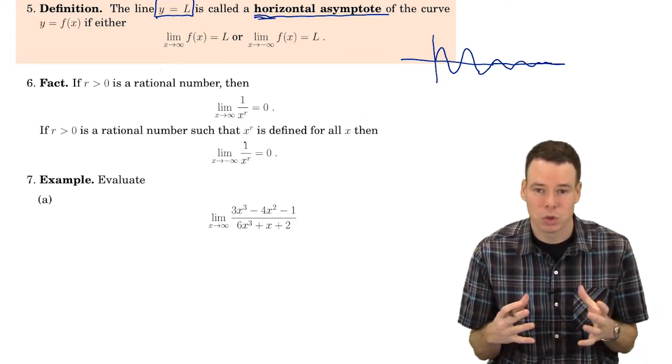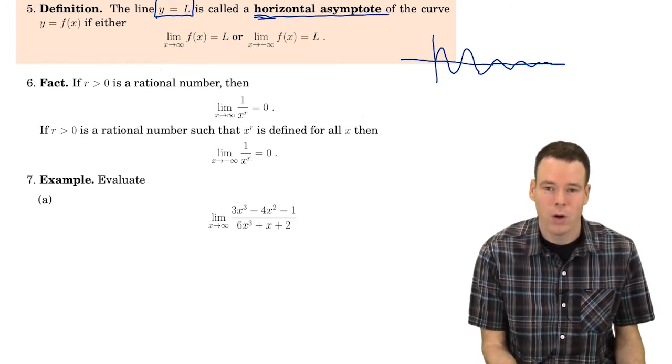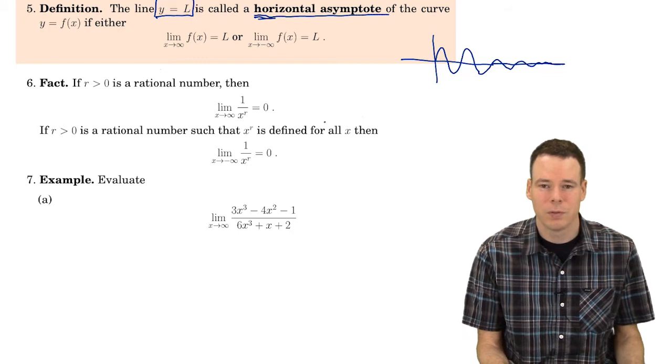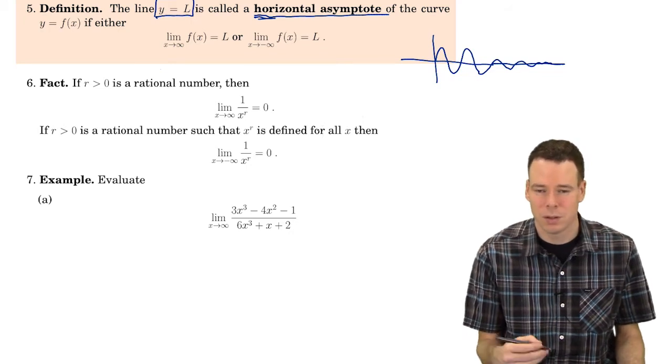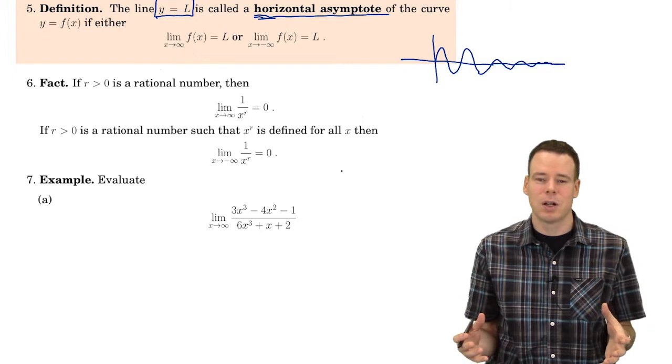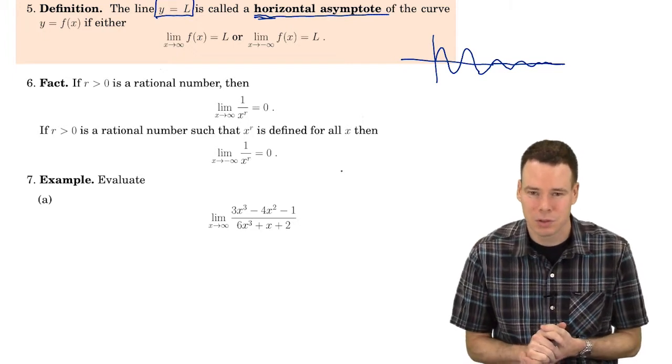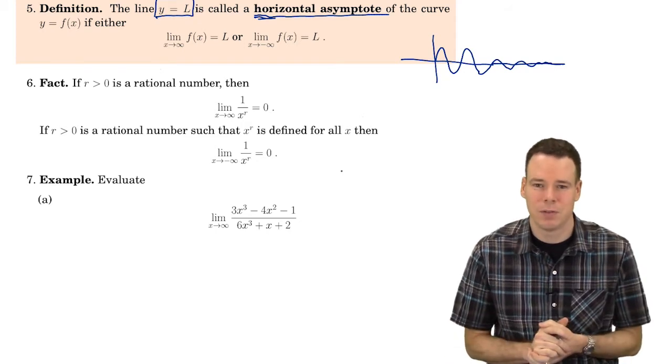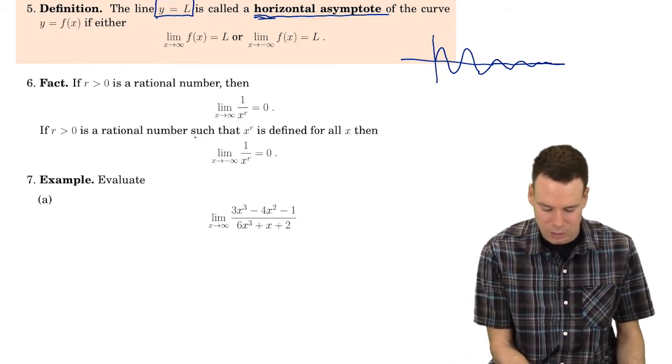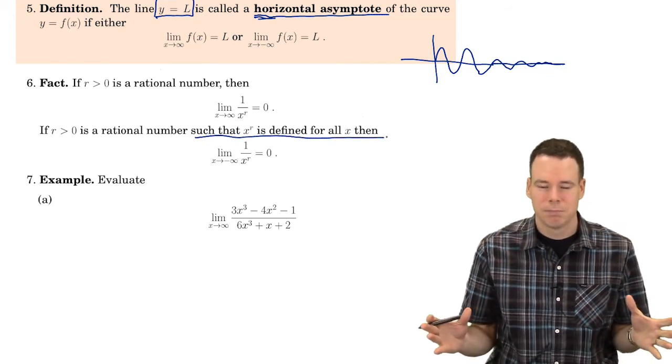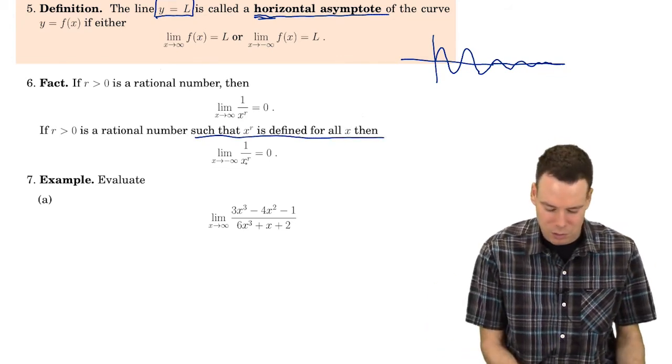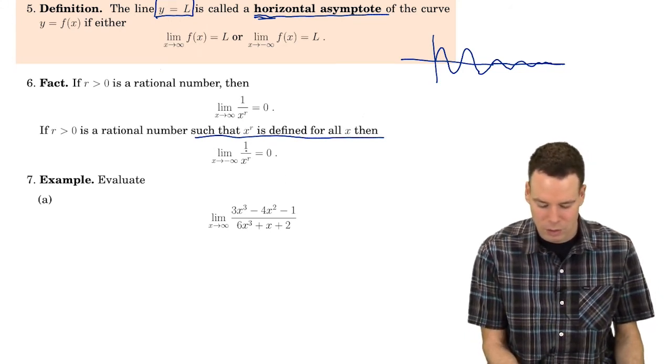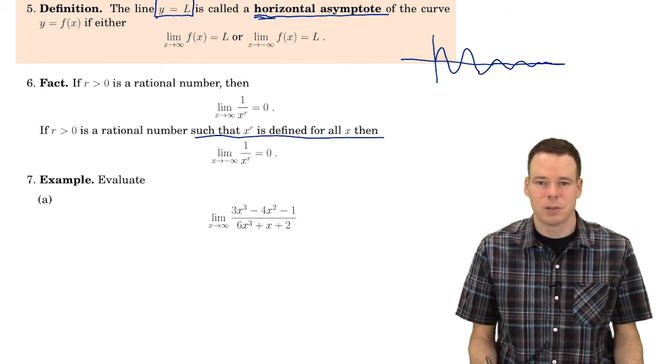If you had an r value of a half, that's square root of x. So if you had 1 over square root of x, it doesn't make sense to talk about the limit as x goes to negative infinity, because square root of x is not defined for negative inputs, not defined for negative x values. So it wouldn't make sense to talk about the limiting behavior as x goes to negative infinity of 1 over the square root of x, because it's not even defined for negative x values. So that's all this statement here, such that x to the r is defined for all x, just make sure your function is defined for negative x values. If it is, okay, then the ratio 1 over x to the r goes to 0 as x goes to negative infinity.